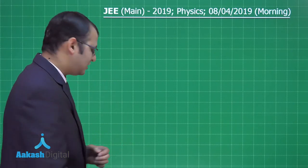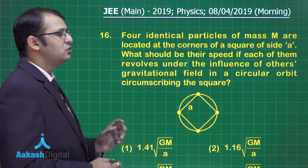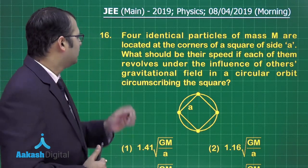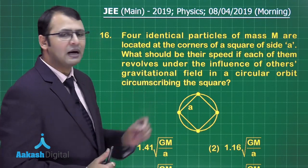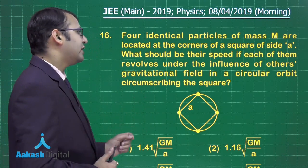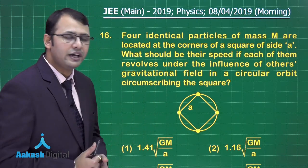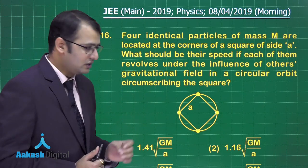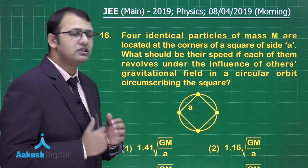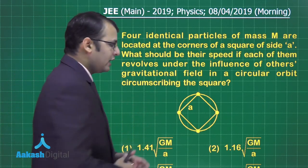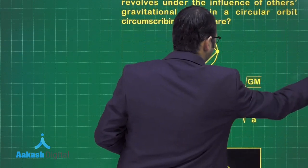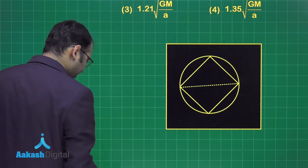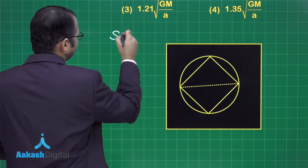Now let's take our next question, that is question number 16. The question you see here belongs to section mechanics from chapter gravitation. As per the question, there are four identical particles of mass capital M each, and they are located at corners of a square of side A. In order to understand the particular case, we need a diagram, so I have already made one for you. Let's start with the solution.